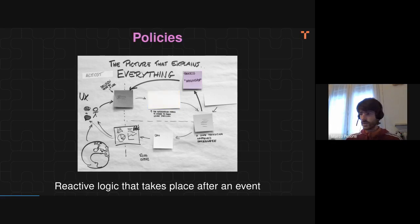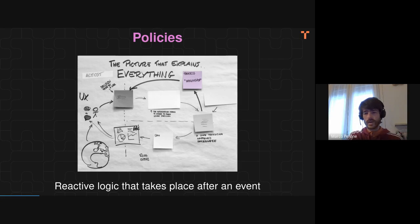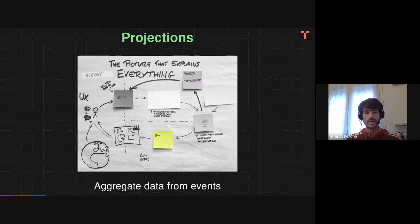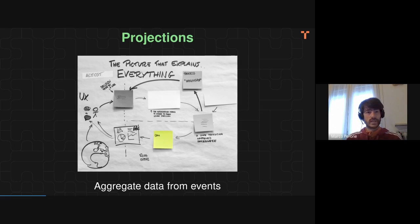Then there are policies, depicted by the purple stickies, which represent the reactive logic part of your domain. Basically, whenever something happens, you want something else to happen after that. And then the last part are the green stickies, which are the so-called projections — the part of your system which, from events (i.e., from state changes of your data), decides how to update the read model, which is the information the user has direct access to.